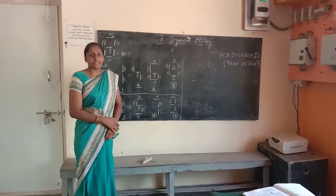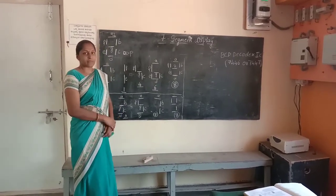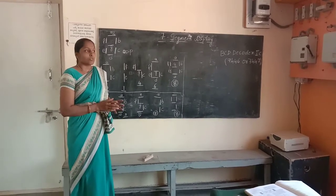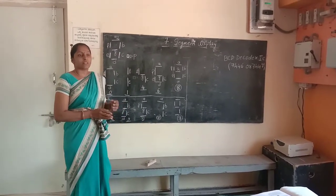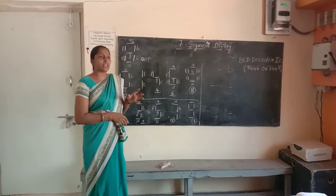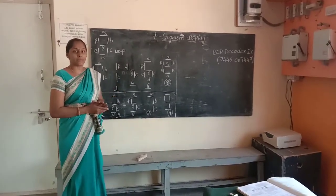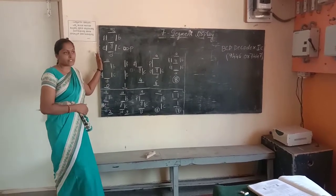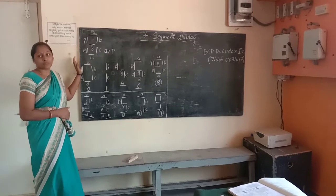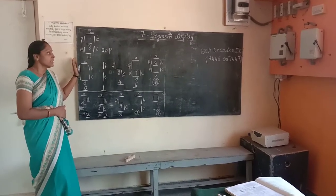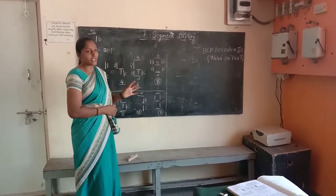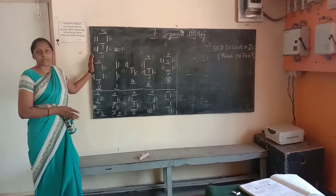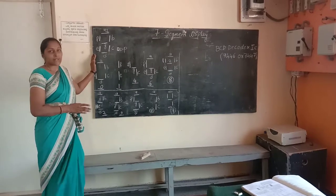The next topic is the 7-segment display. The 7-segment display is available on electronic equipment. Digital equipment uses this as the output with a 7-segment display model.